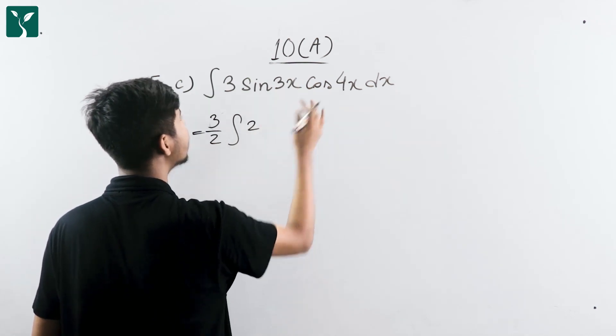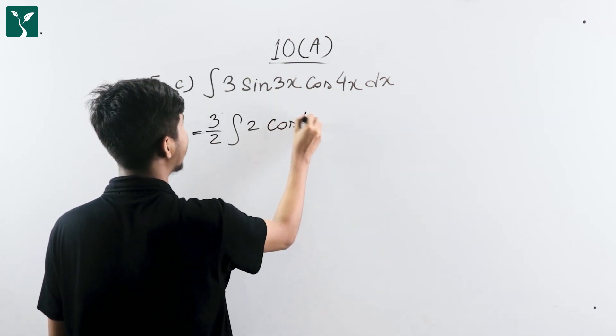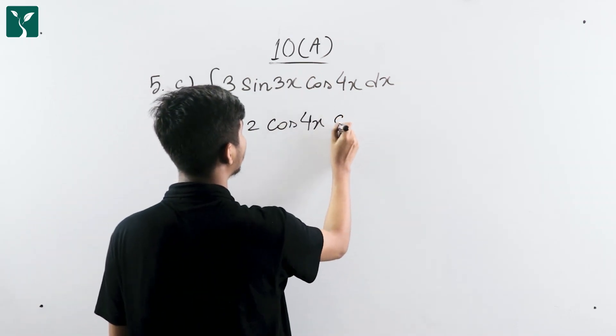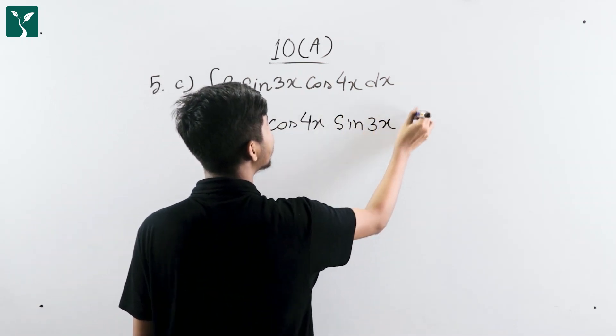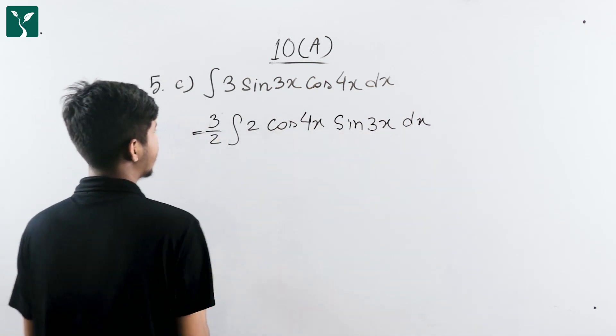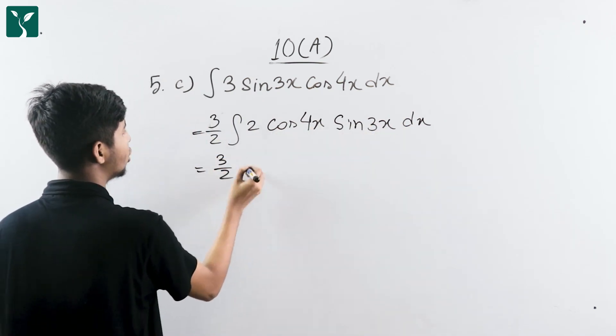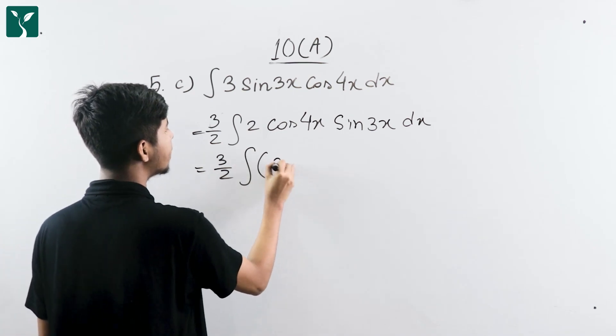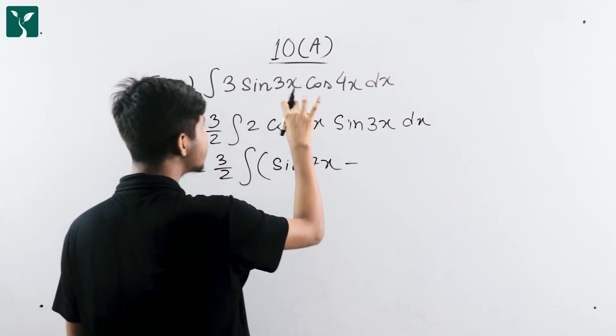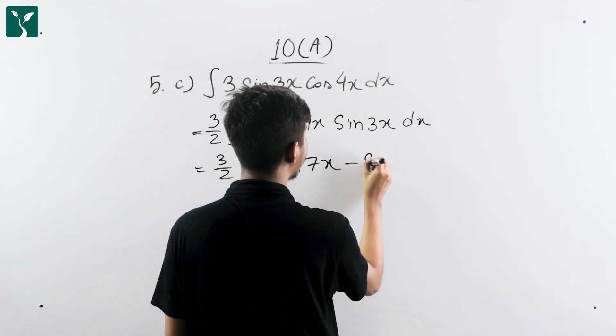For sin 3x and cos 4x, we use the formula: sin A cos B equals one half times sin(A+B) minus sin(A-B).